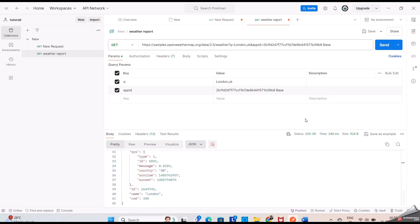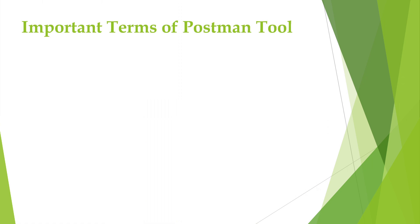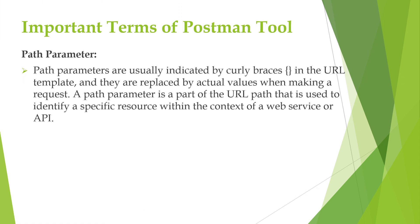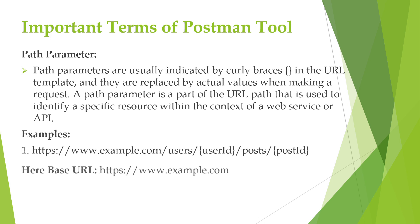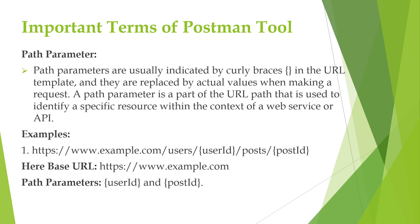Next is path parameters. Path parameters are a set of parameters within curly braces, placed within the path of the endpoint just before the query parameters. Whenever developers want to test some particular services running in the background, they use path parameters. These path parameters are used to identify a specific resource within the URL path of a request. This is how the path parameter looks in a particular URL.